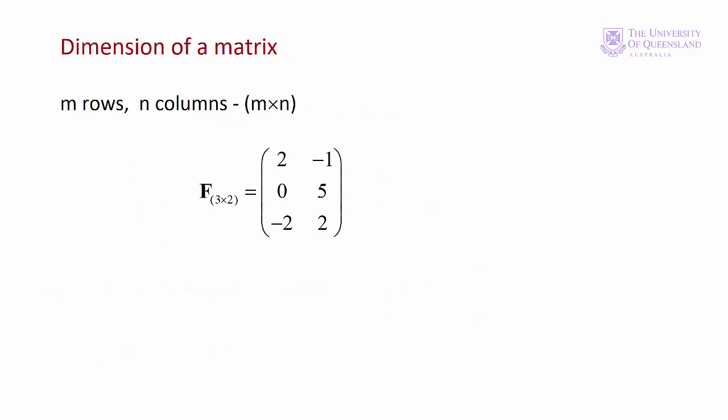An important feature of a matrix is its dimension. The dimension is specified in terms of the rows and columns of the matrix. We always specify the rows first then the columns. In general M rows and N columns. Matrix F here has three rows and two columns.